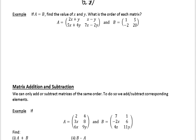This example says if A equals B, so that's matrix A equals matrix B, find the value of x and y. And what is the order of each matrix?